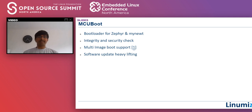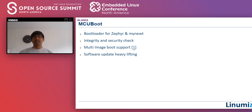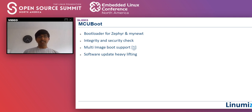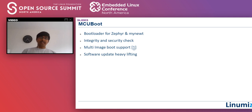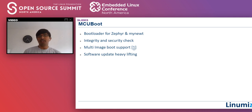MCU Boot also supports multiple boot image support. For example, an SoC with both ARM Cortex-M4 and ARM Cortex-M33 needs two independent cores running separate software — MCU Boot supports multi-image boot chain loading in such cases. There was a talk on this in 2018 by David Brown you can refer to. The most important part for this talk is software update — the heavy lifting of software installation is done by MCU Boot.